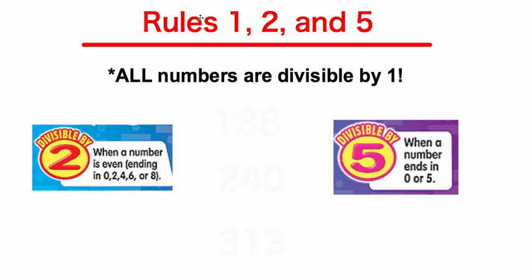Let's start with the rule for 1. All numbers are divisible by 1. So no matter what number you pick, 1 is going to be a factor of that number and will evenly go into all numbers.